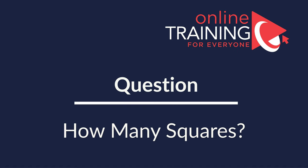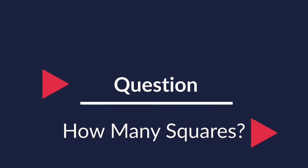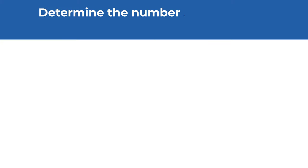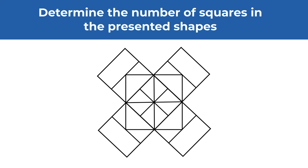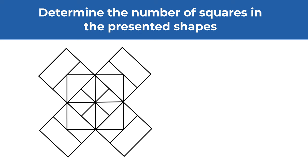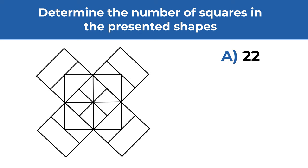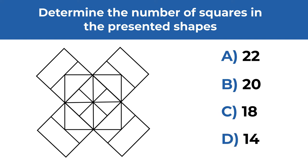Here's a very interesting question from the most recent test. You need to determine the number of squares in the presented shape. You have four different choices: choice A, 22; choice B, 20; choice C, 18; choice D, 14.